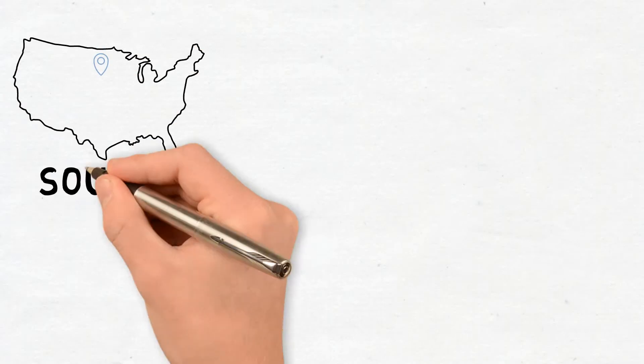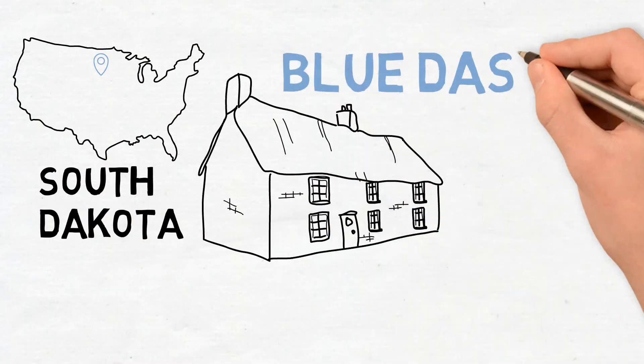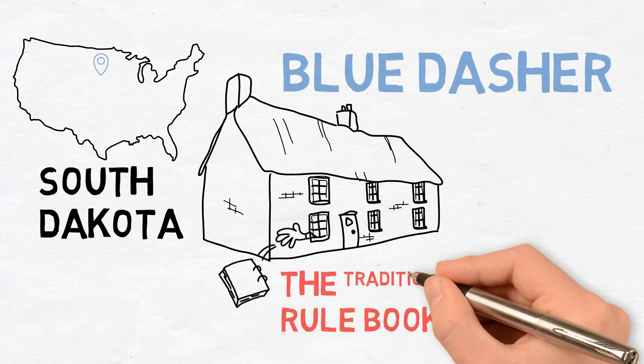So your farm is in South Dakota. Can you describe it a bit? What are you farming? Well, what we did with Blue Dasher is we took the rulebook, we looked at it, and then we threw it out the window. The traditional rulebook. Right.